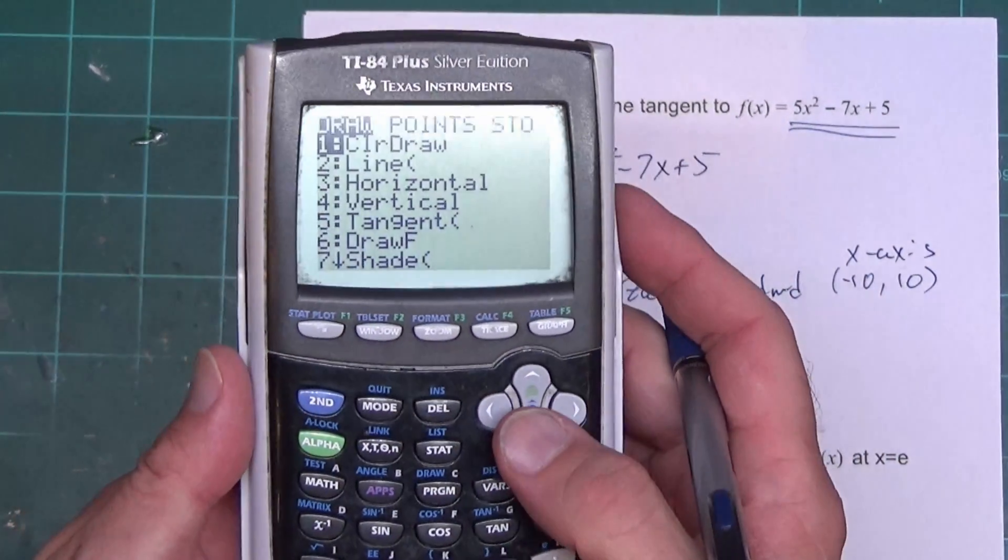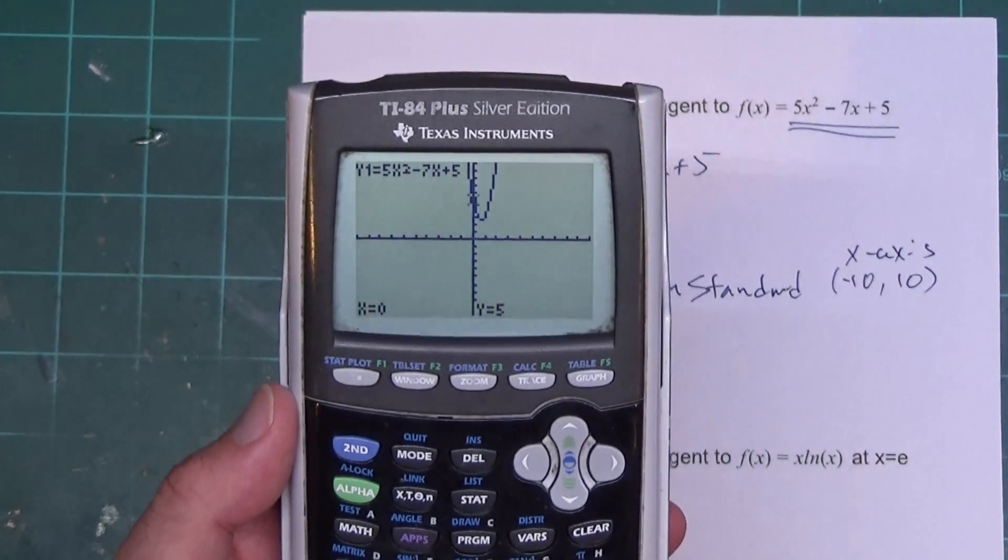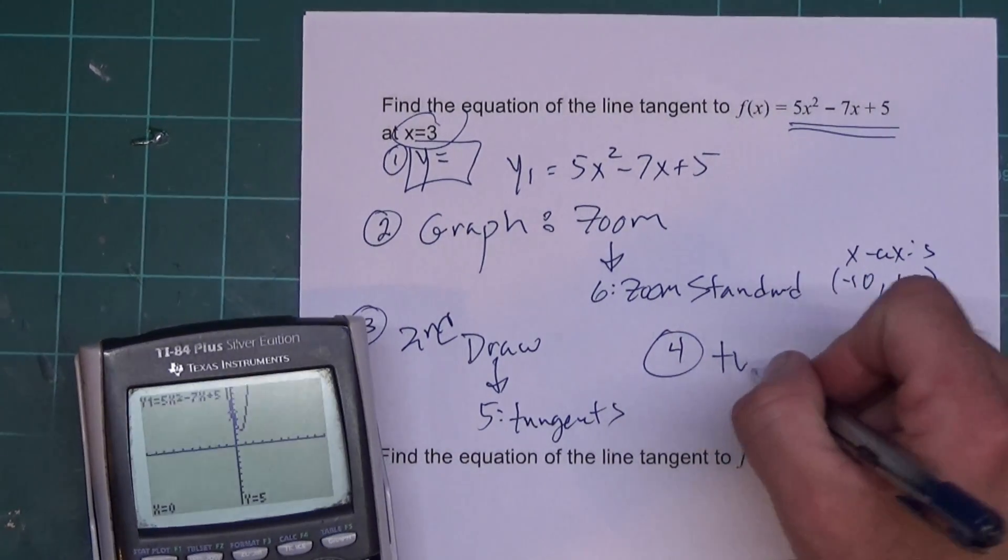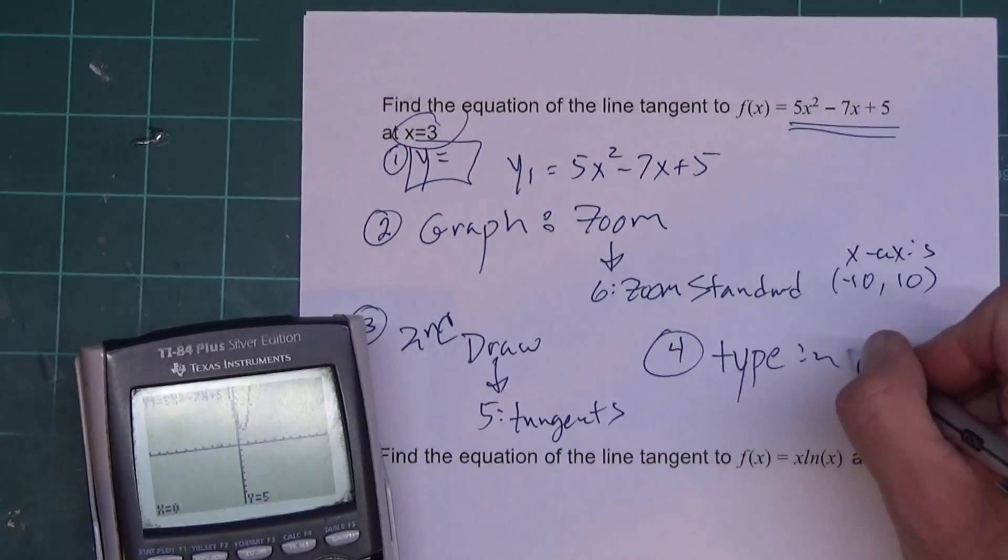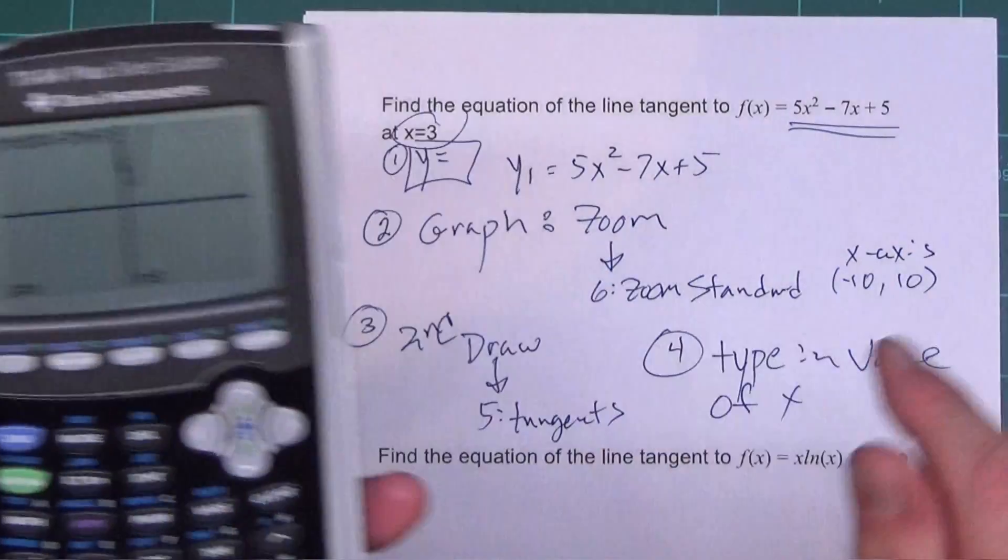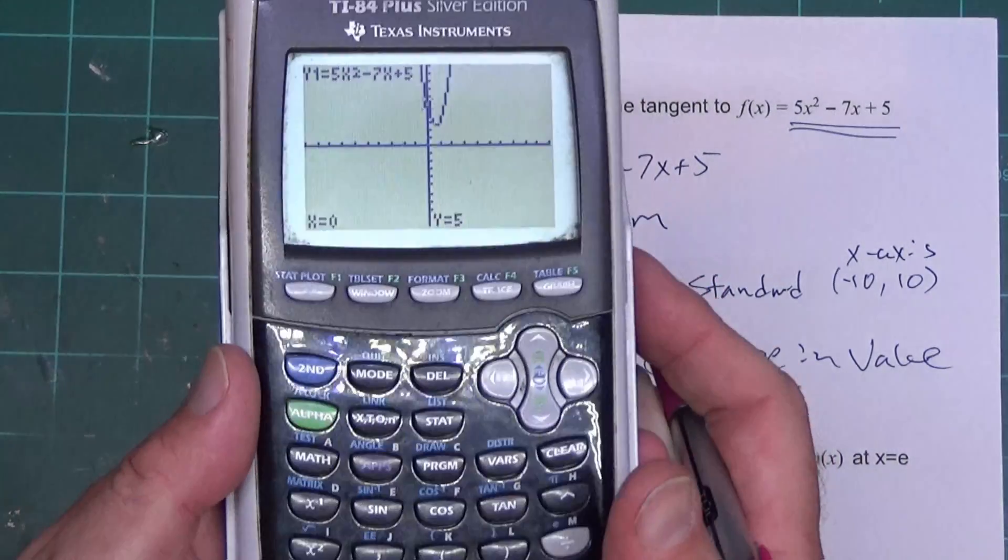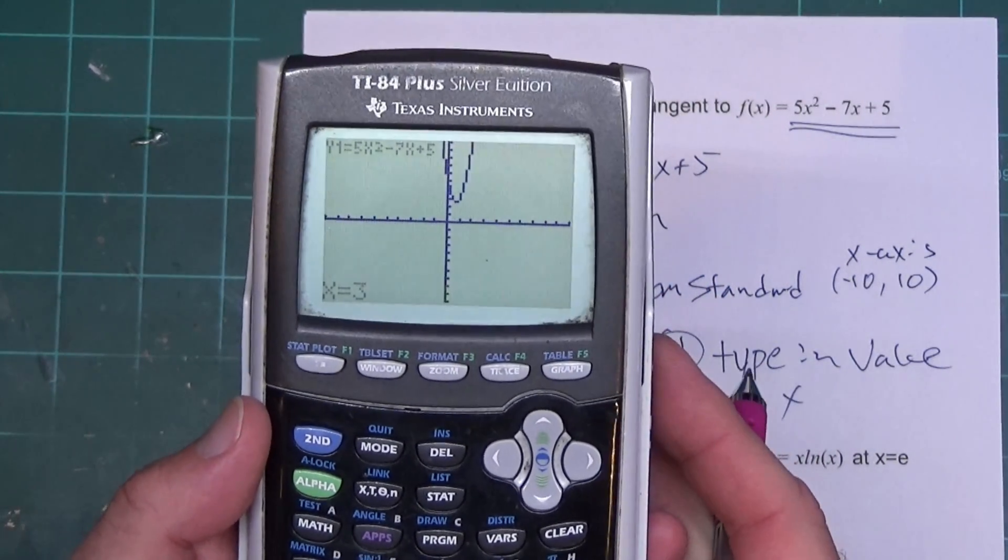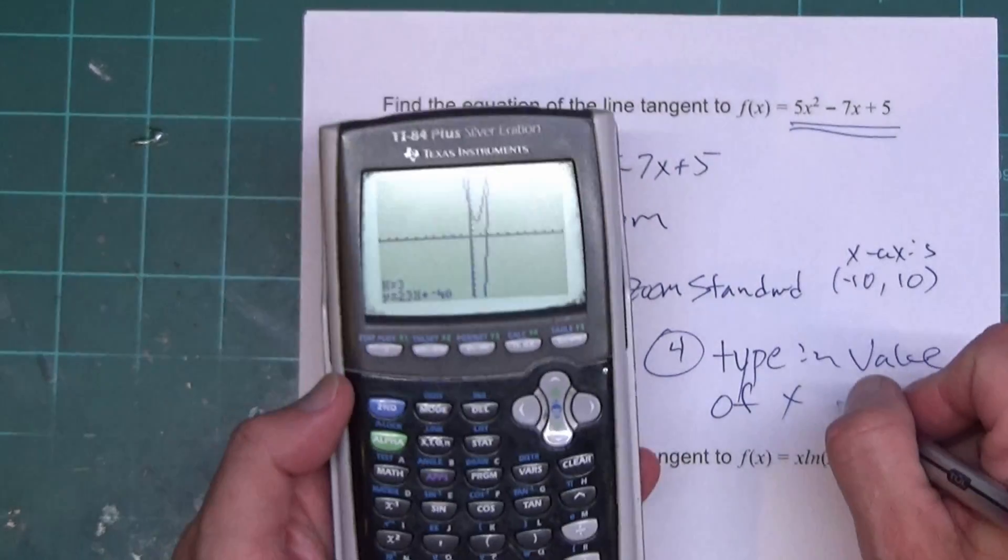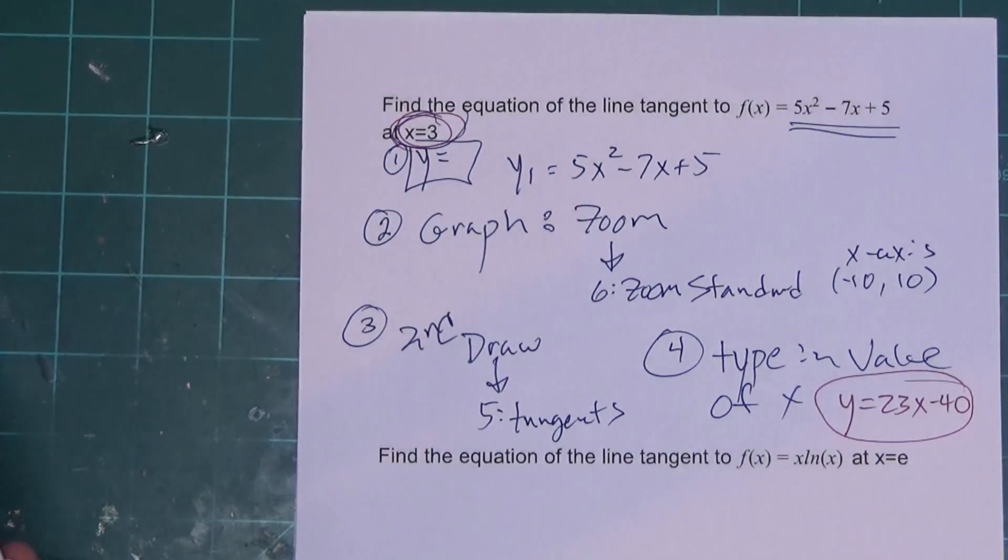So on the screen here, I'm sorry, I'm staring at your very bright lights. I go down to number 5, press Enter. And it takes you back to the graph. It looks a lot like it didn't do anything. So your fourth step is you have to type in the value of x. So I want to type in the value of x. And for mine, the value of x right here is x equals 3. So I'm going to type in 3 and press Enter. 3, Enter. And it gives you the equation of tangent line down here at the bottom. So it's y equals 23x minus 40. And there's my equation of the tangent line.